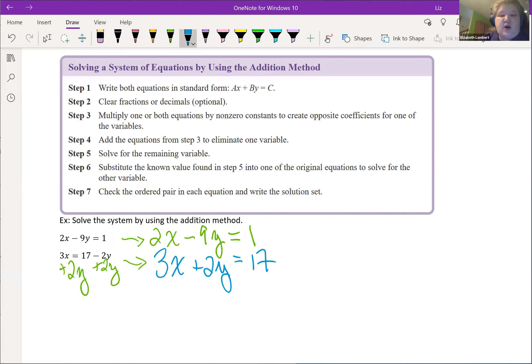So what we want now is we want to set it up so in step four we can add the equations so that one of the variables is going to add to zero. I need to turn my coefficients into a pair of numbers that add to zero. I've got two and three or negative nine and two. Negative nine is the biggest or furthest number from zero so I don't want to use it. I'm going to stick with the two and the three.